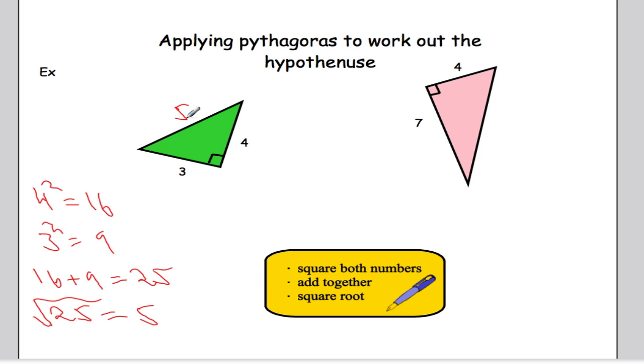So this side, I can say with confidence, is 5 units of length. Let's have a look at this one. So again, square both numbers, so 4 squared equals 16, 7 squared equals 49, add them together, 16 plus 49 gives me 65, and then take the square root of 65. The square root of 65 is 8.06 units. So I can say with confidence that this is 8.06, and that is how you use Pythagoras to work out the hypotenuse.